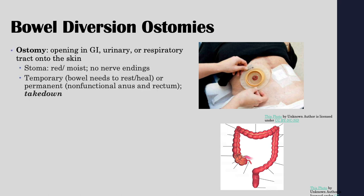Bowel diversion ostomies — an ostomy is an opening in the GI, urinary, or respiratory tract onto the skin. The stoma is a red, moist part of either the intestine or the urinary or respiratory tract that comes out. If you have a GI ostomy, they take out a piece of the intestines and that piece becomes the stoma. It should be red and moist and does not have any nerve endings. It can be temporary — allowing the bowel to rest and heal — or permanent because part of the system is non-functional. A takedown procedure means the ostomy is being removed and the intestines are put back in.